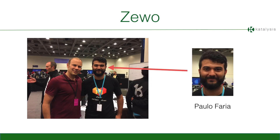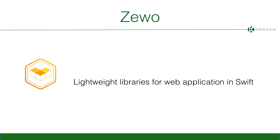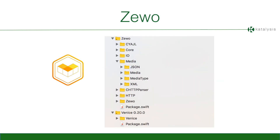This is a picture I took from Paulo's Twitter account — he has a picture with Chris Lattner. Paulo is based in Brazil and is Zevo's creator. Zevo doesn't claim to be a framework like Vapor, Perfect, or Kitura — it aims to be just lightweight libraries for web applications in Swift. This is the latest version of Zevo, which is actually super lean, much leaner than a year ago, because the move to Swift 4 killed a number of libraries.